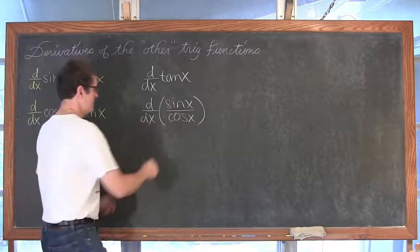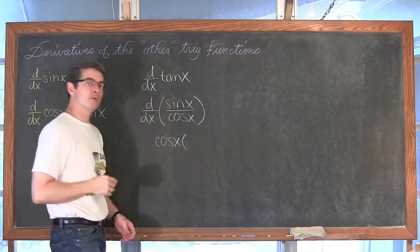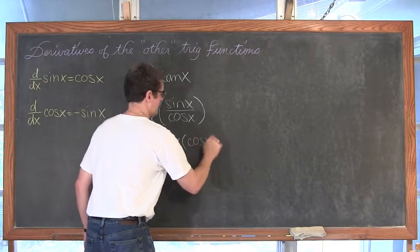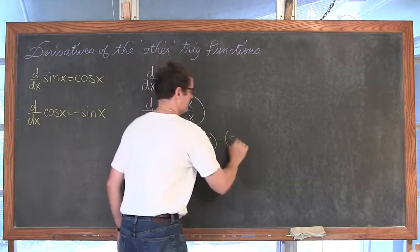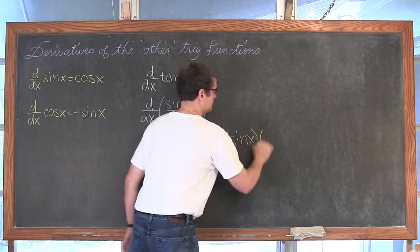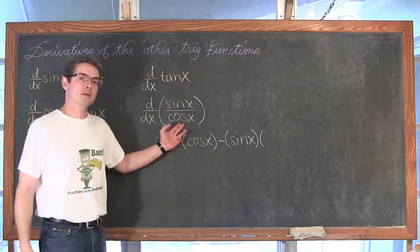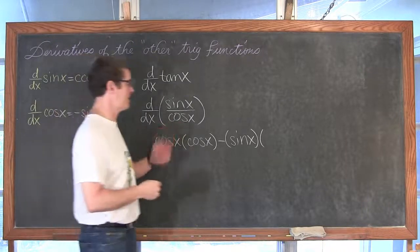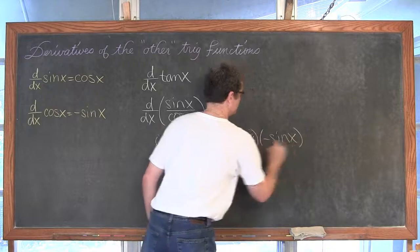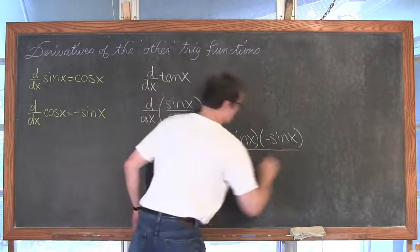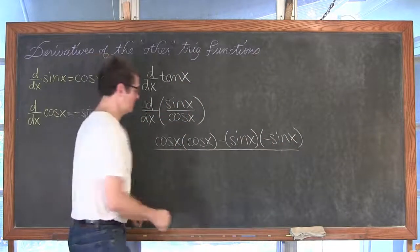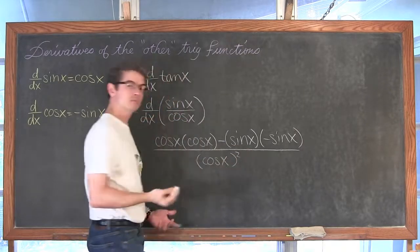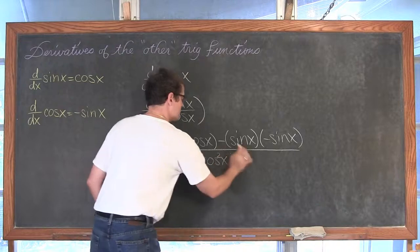Then walk through the quotient rule to find this derivative. That is going to be the denominator times the derivative of the numerator. The derivative of sine is cosine, minus the numerator times the derivative of the denominator, which is the derivative of cosine with respect to x — that is negative sine x. All over the denominator squared, which you can write as cosine x squared or cosine squared of x.